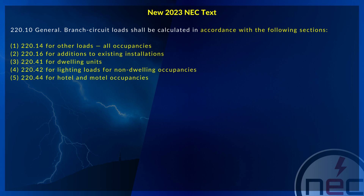Item 3 covers 220.41 for dwelling units. Item 4 covers 220.42 for lighting loads for non-dwelling occupancies. Item 5 covers 220.44 for hotel and motel occupancies.